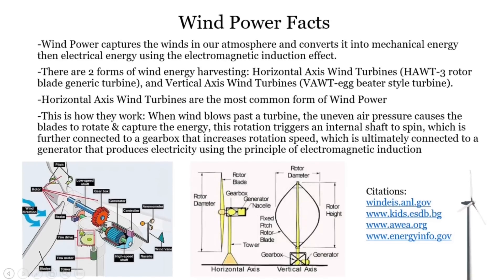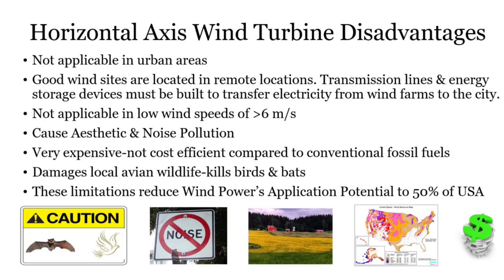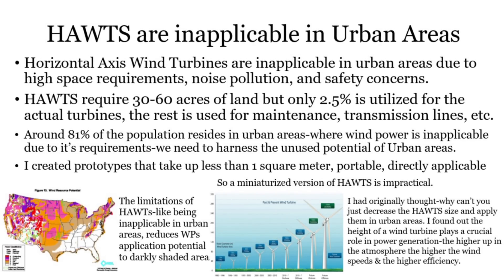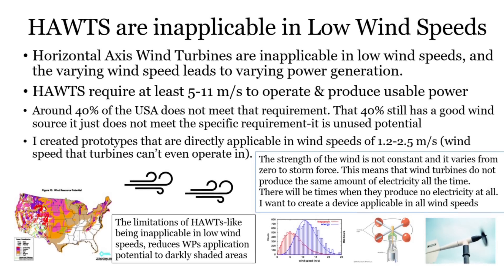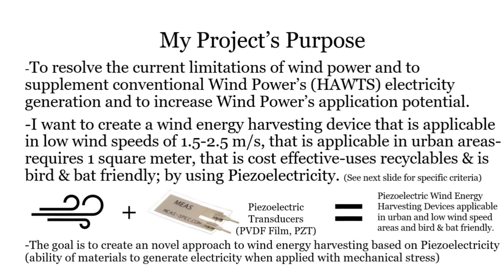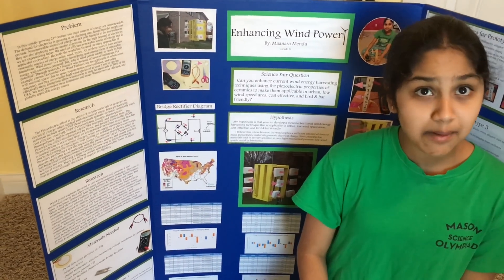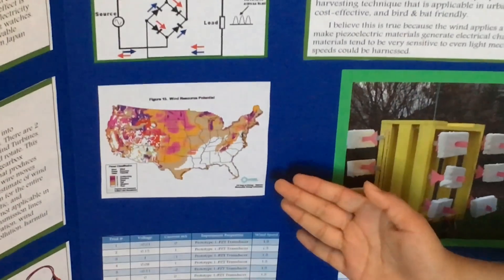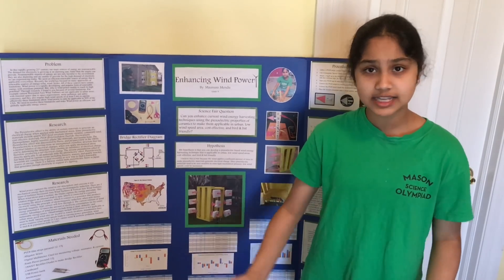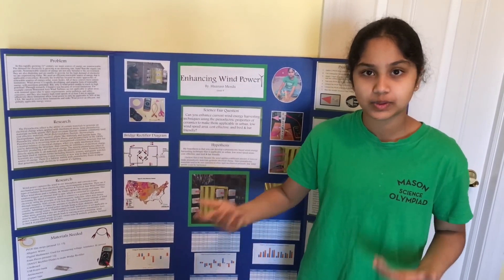We found wind power was unable to reach its full potential due to several limitations. For example, horizontal axis wind turbines are inapplicable in urban areas due to high space requirements, safety concerns, and noise pollution, and they require high wind speeds of 5 meters per second to even operate. These limitations reduce wind power's application potential to 50% of the United States. We need to resolve these limitations and make wind power an efficient and globally applicable energy source.